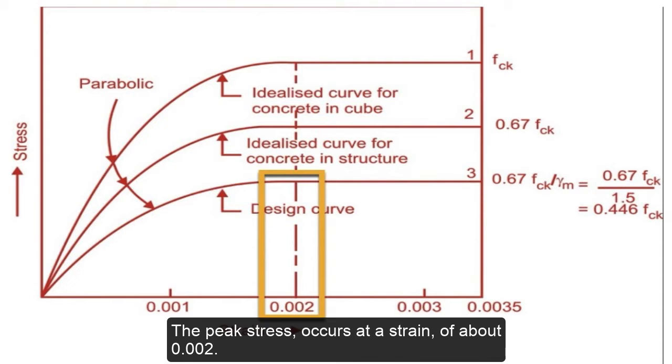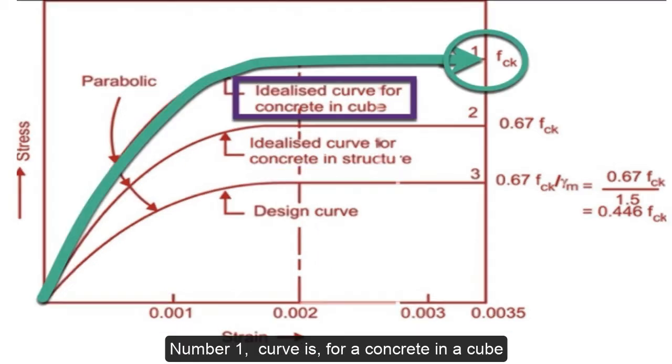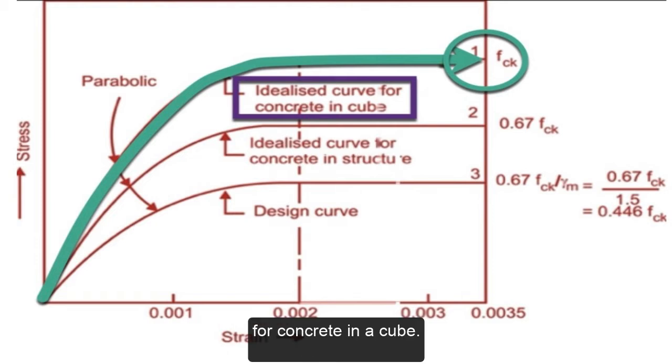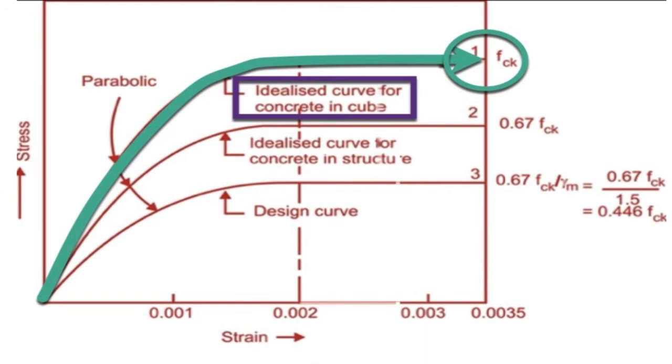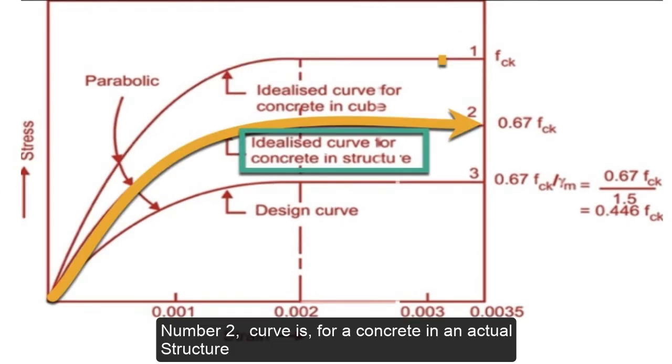at a strain of about 0.002. Curve number one is for concrete in a cube as shown in the figure. IS 456-2000 specifies the idealized stress-strain curve for concrete in a cube.